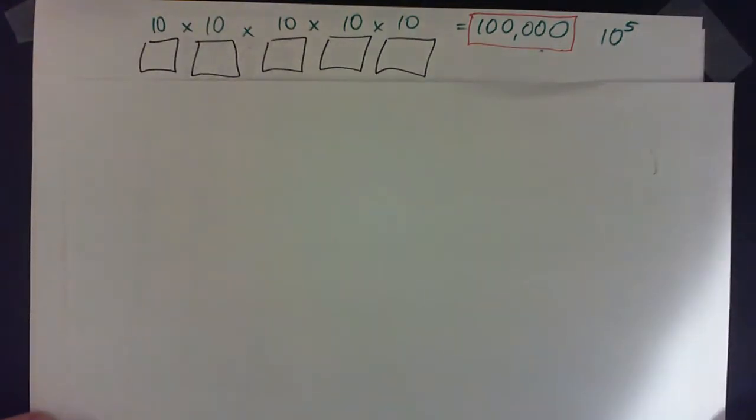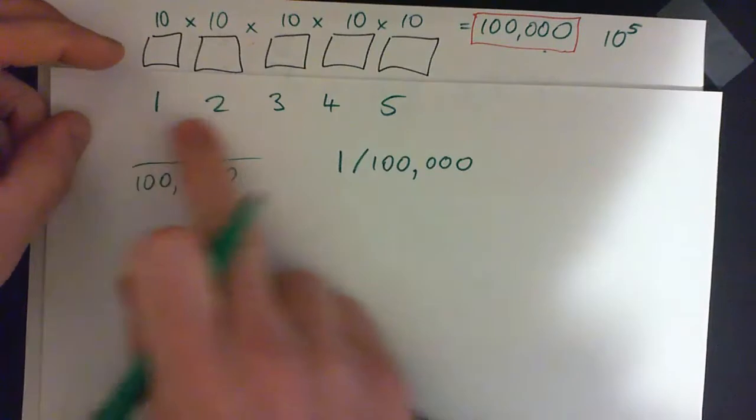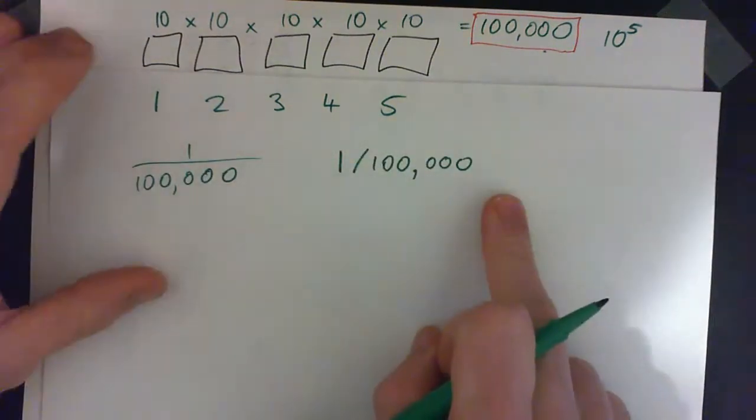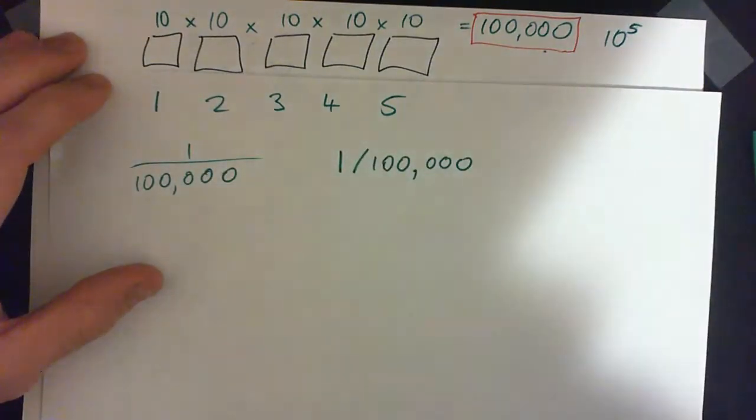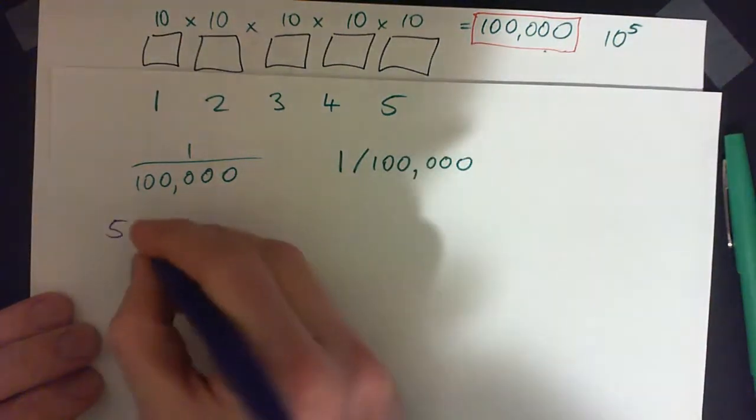Well we've just gone over how the chances of guessing one combination like 1,2,3,4,5 is 1 out of 100,000. So if you guess, if you make 50 guesses, so 50 guesses,